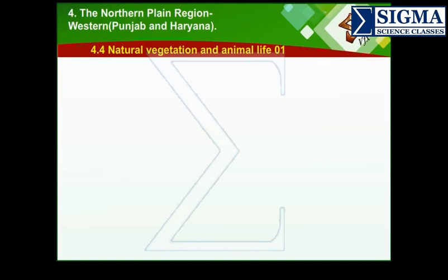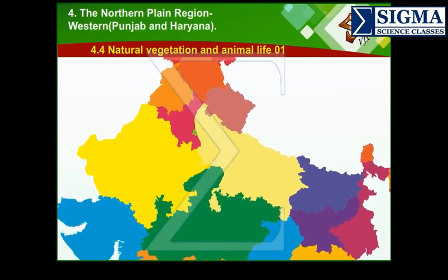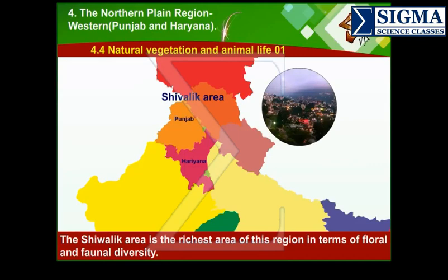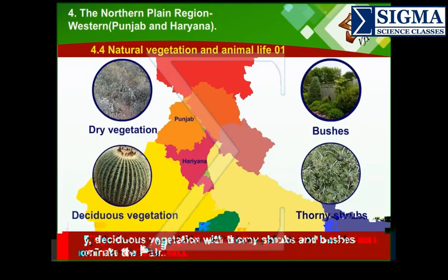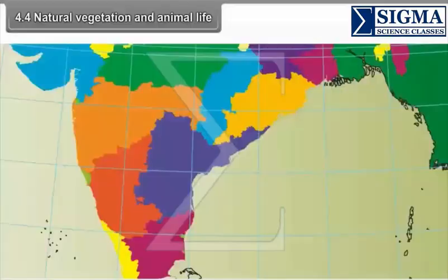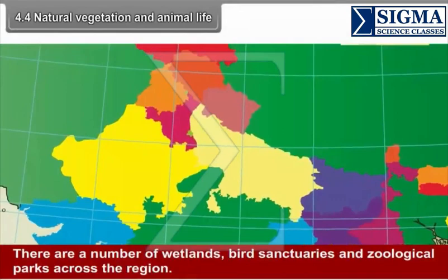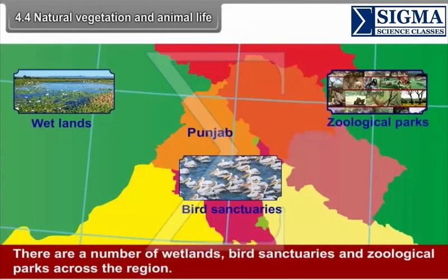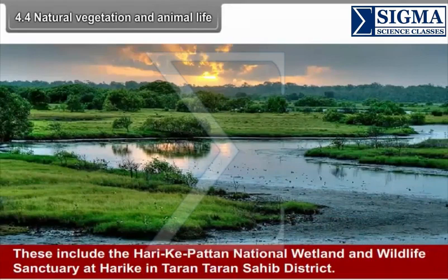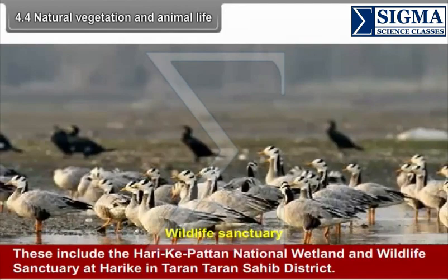4.4 Natural Vegetation and Animal Life. The Shivalik area is the richest area of this region in terms of floral and faunal diversity. Dry deciduous vegetation with thorny shrubs and bushes dominate the plain, with Eucalyptus, Pine, and Kikar trees present. There are a number of wetlands, bird sanctuaries and zoological parks across the region, including the Harike Pattan National Wetland and Wildlife Sanctuary in Tarn Taran Sahib District.